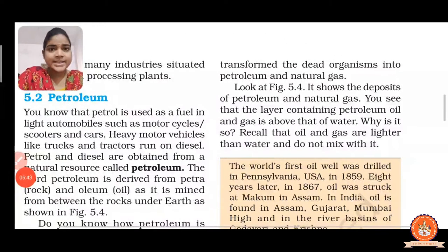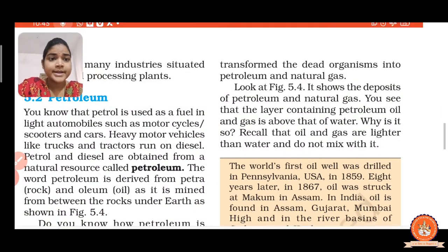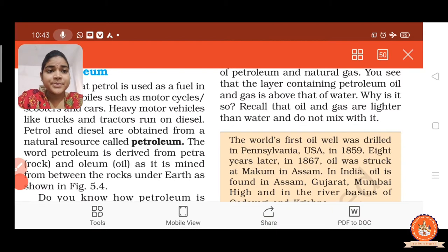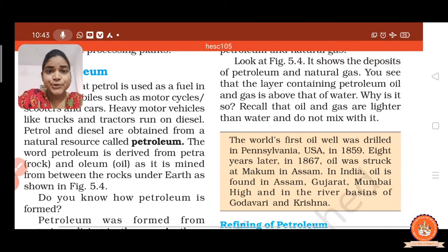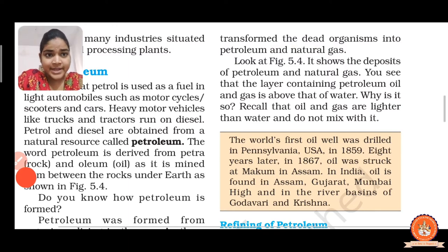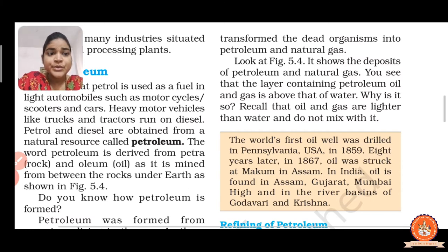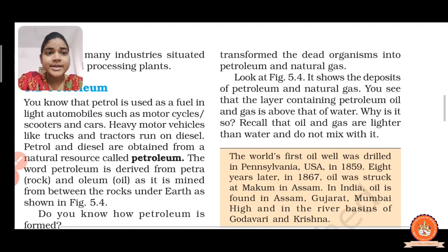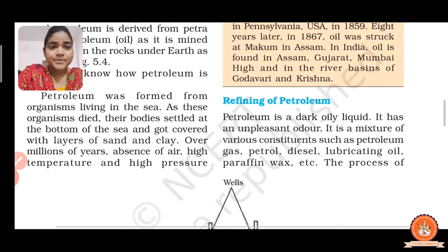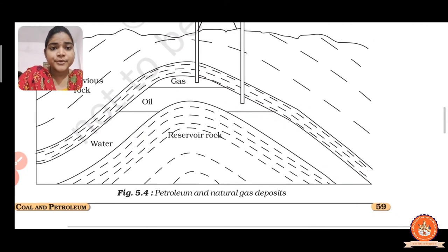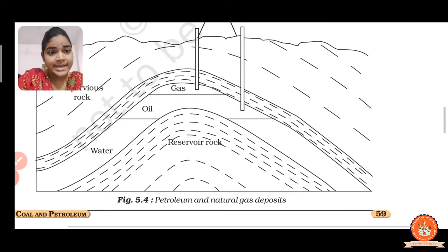So you see how petroleum is formed. Petroleum was first drilled in USA in 1859 and after eight years, in 1867, it was found in Assam. It is also found in Gujarat, Bombay High, and in the rivers Godavari and Krishna. Figure 5.4 shows petroleum and natural gas deposits — when animals settle at the bottom of the sea, we get petroleum and natural gas.